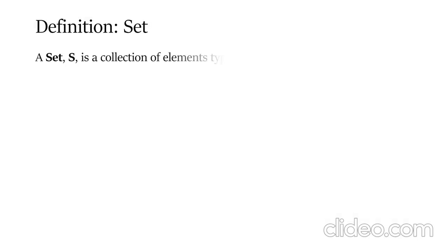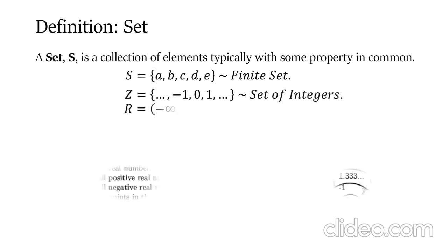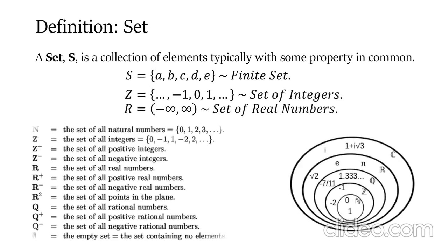Definition: A set S is a collection of elements, typically with some property in common. Here S is a finite set consisting of the letters a, b, c, d, and e. The cardinality of the set is five. Z is the set of all integers. R is the set of all real numbers, and the cardinality of R is c, the continuum.